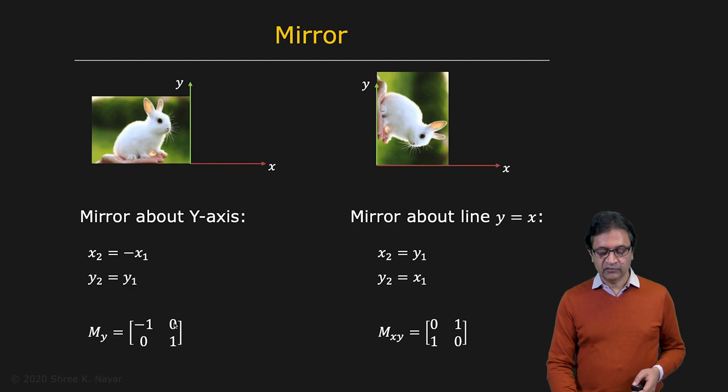And if you wanted to mirror about, say, another line, which is Y equal to X, the 45 degree line right here. Essentially, what that means is that you're going to flip the image in both directions. And so you have X2 equal to Y1 and Y2 equal to X1. And you get this matrix right here.